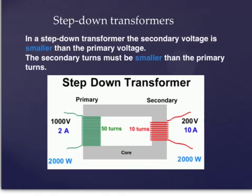Now we look at step-down transformers. In a step-down transformer, the secondary voltage is smaller than the primary voltage. Here we have 200 volts which is less than 1000 volts. And also the secondary turns must be smaller than the primary turns. Here we have 10 turns, here we have 50 turns.